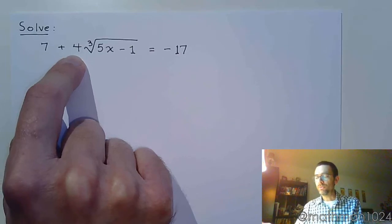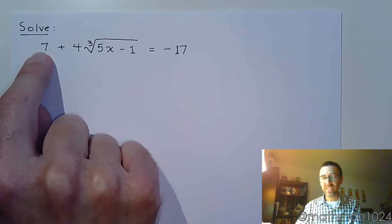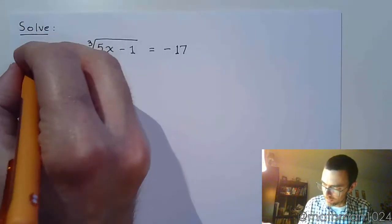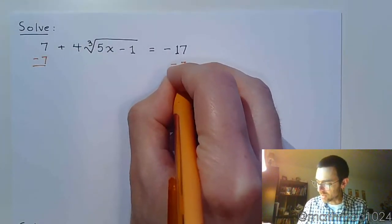The 4 is connected to the radical through multiplication. The 7 is not really connected. So the first order of business is to move the 7 to the other side. So let's subtract 7 on both sides like this.